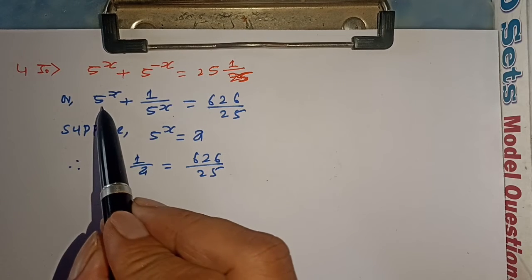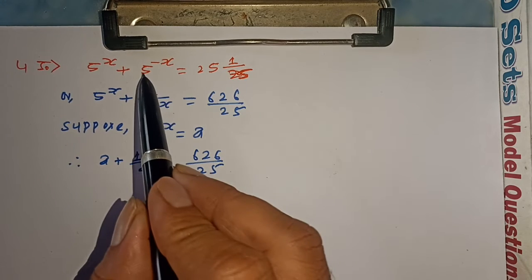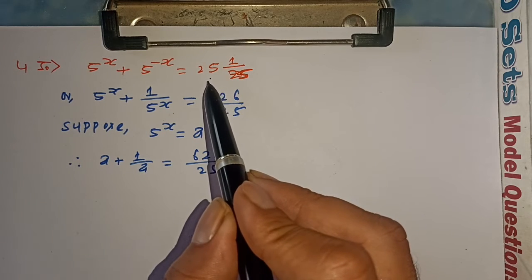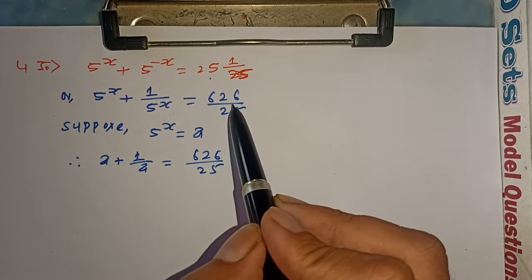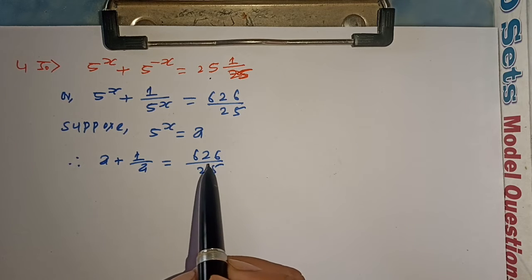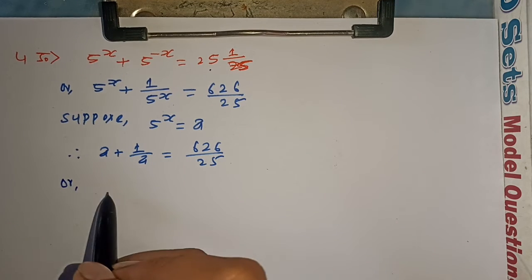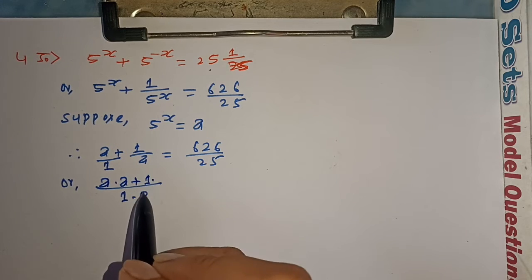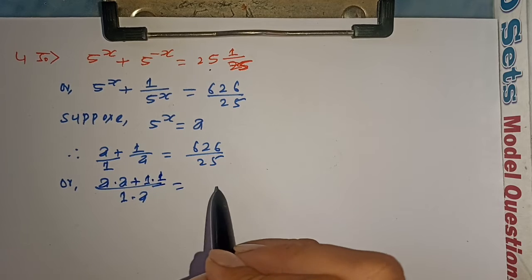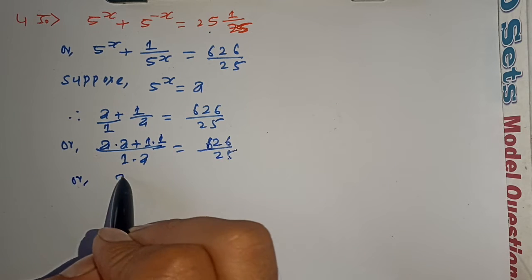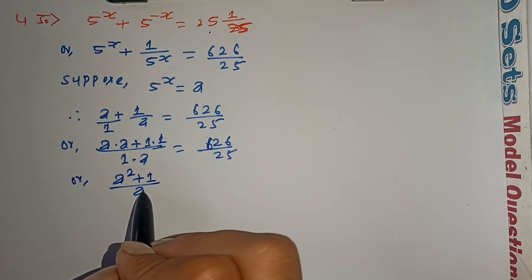Next problem: 5 to the power x plus 1 upon 5 to the power x equals — suppose 5 to the power minus x is substituted. Let a equal 5 to the power x, so a plus 1 upon a equals 626 upon 25. Note 25 into 25 equals 625, and 625 plus 1 equals 626, so a plus 1 upon a equals 626 upon 25.